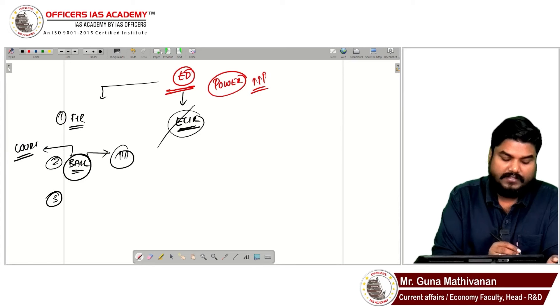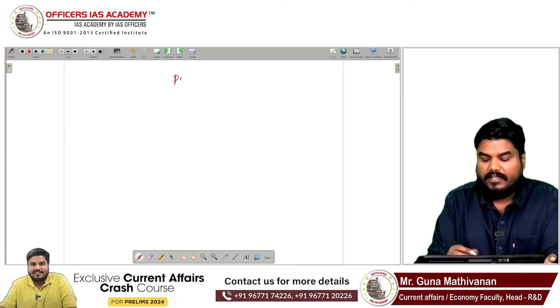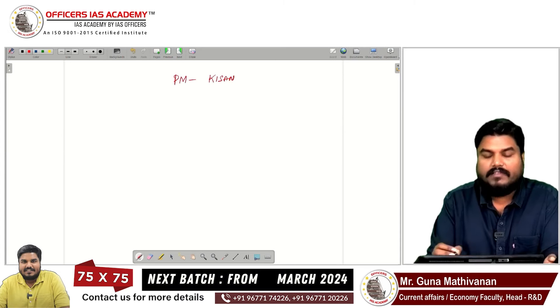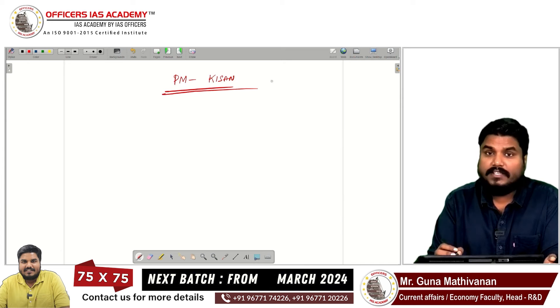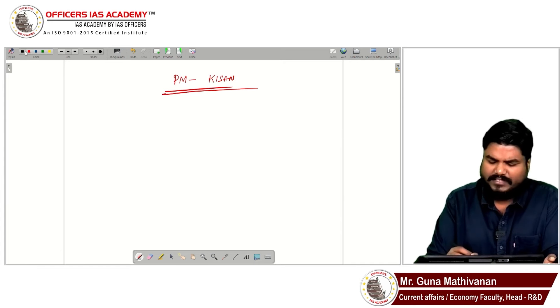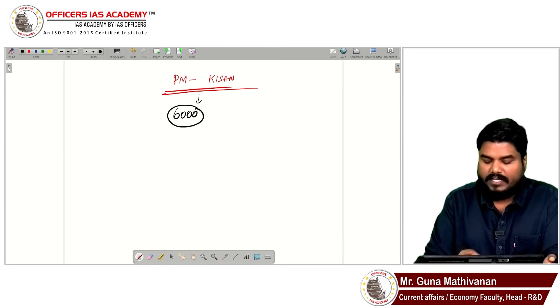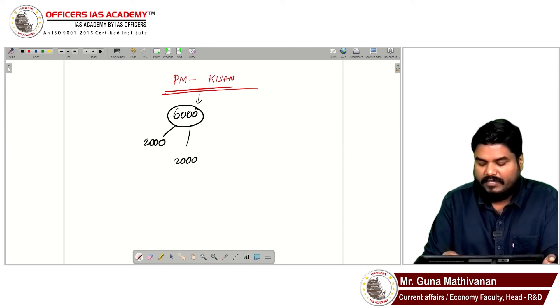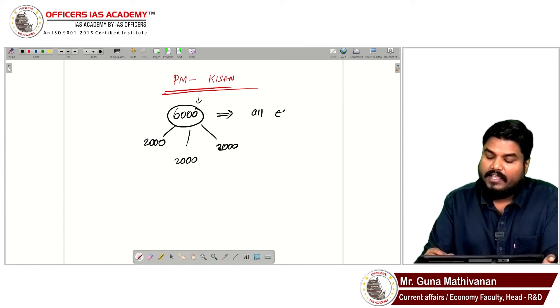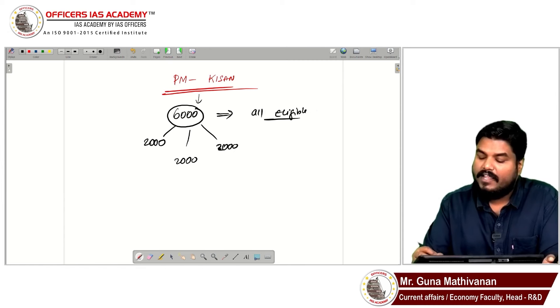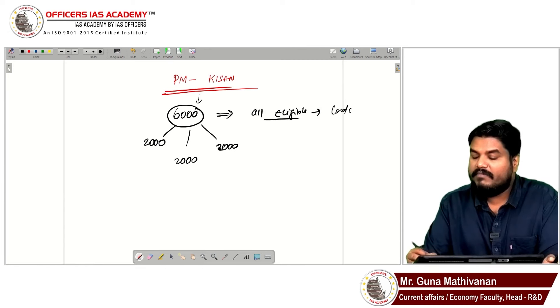Pradhan Mantri Kissan Samman Nidhi is a very simple scheme. Under this scheme, 6000 rupees will be given in three installments to all eligible land-owning farmers.